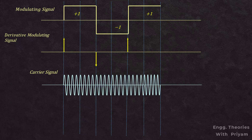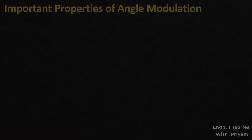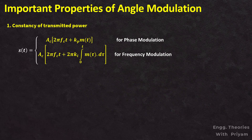Here we can understand phase modulation easily: as the modulating signal changes, it creates either a positive or negative impulse, and phase modulation occurs in the modulated signal. Now let's look at some important properties of angle modulation. The first property is the consistency of transmitted power. From the previous lecture, we know that the angle modulated signal s(t) equals Ac·cos(2πfc·t + kp·m(t)) for phase modulation.